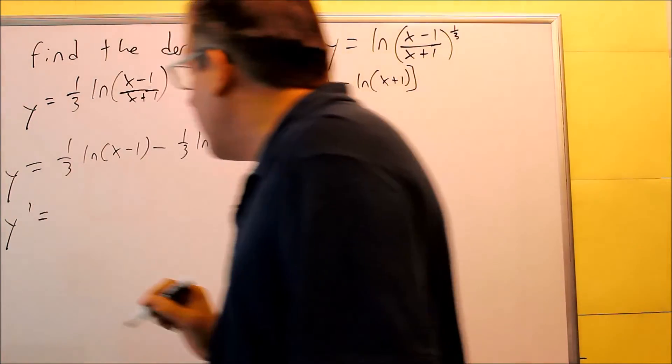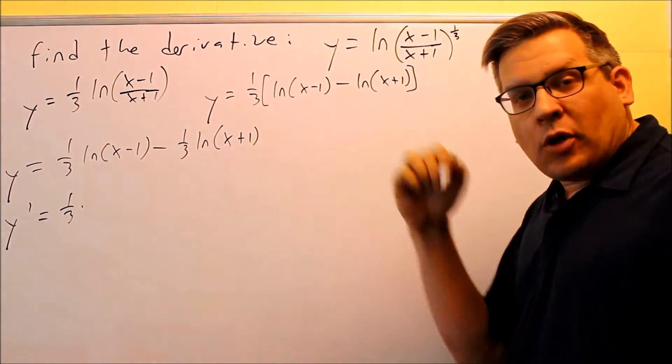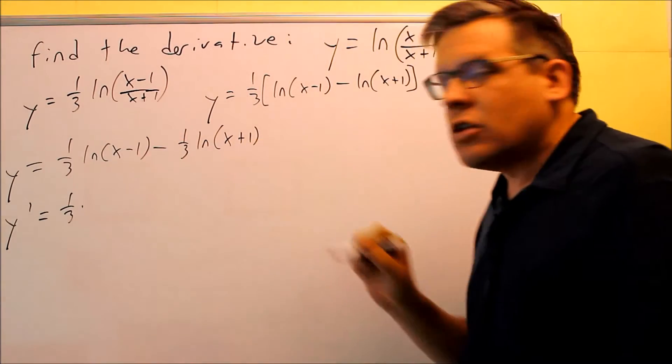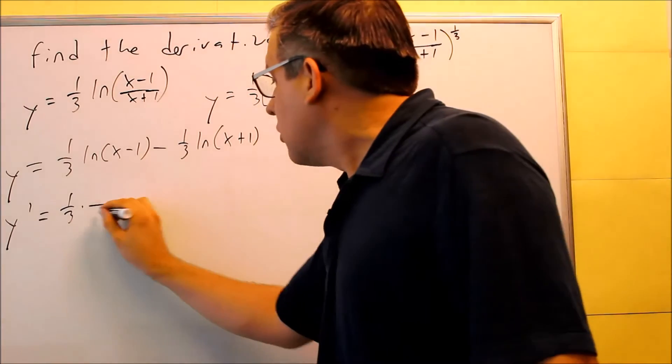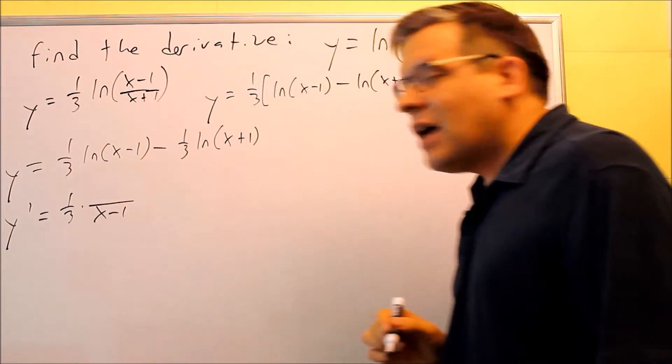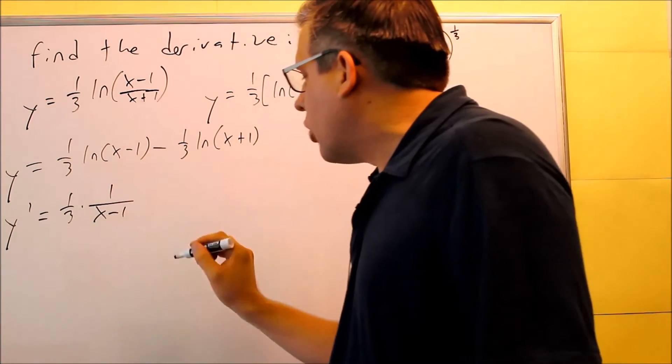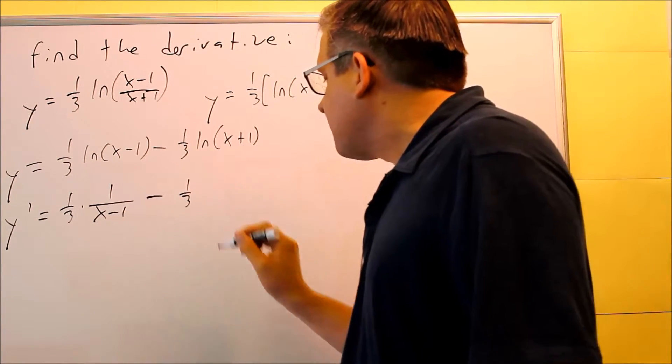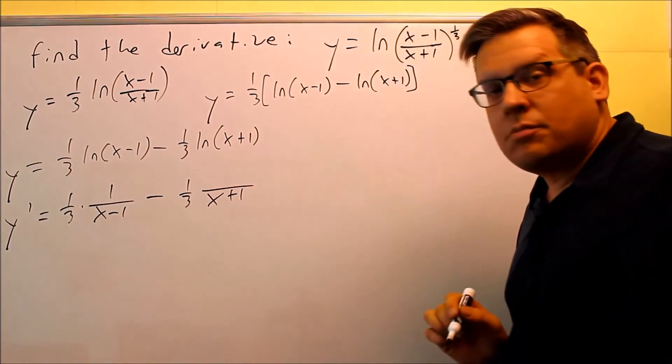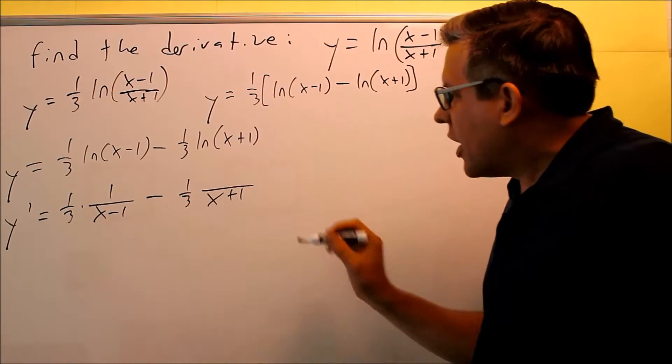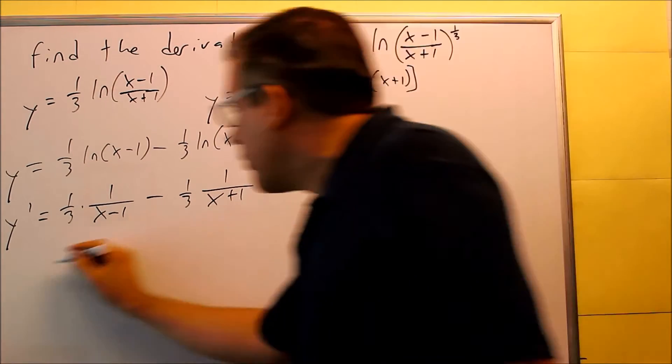When we apply the derivative, we have 1/3, and then we're going to apply the u-prime over u formula for each of these logarithms. The u is x minus 1. That's going to go on the bottom. On top, we're going to do u-prime, so the derivative of the inside. The derivative of x minus 1 is just 1. And then, over here, we're going to do the same thing. x plus 1 goes in the bottom. The derivative of the inside is 1. So that would be correct for your derivative.